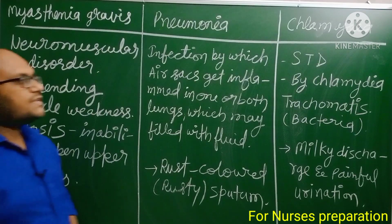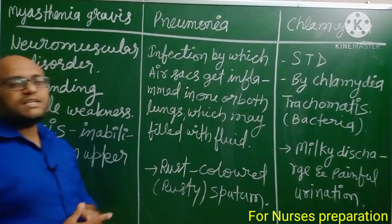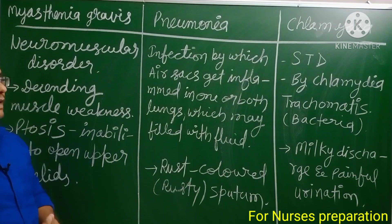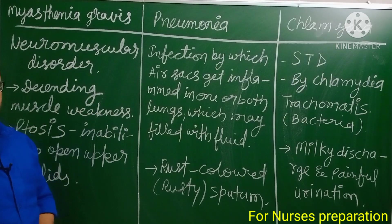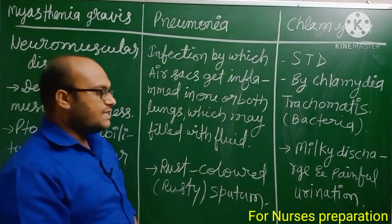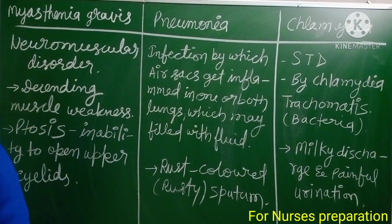The next disease is Chlamydia, a sexually transmitted disease caused by the bacteria Chlamydia trachomatis. The important clinical signs of this disease are milky discharge and painful urination.